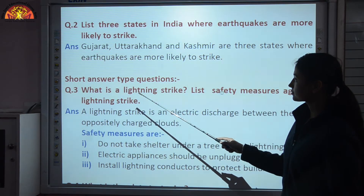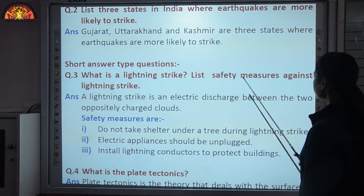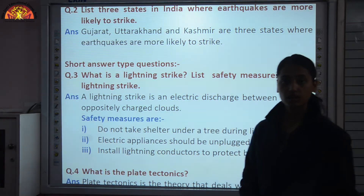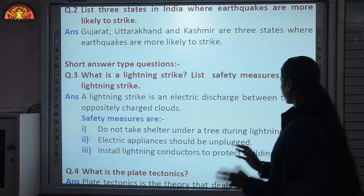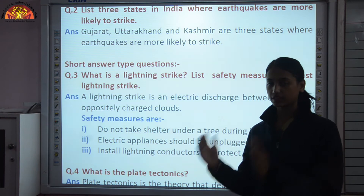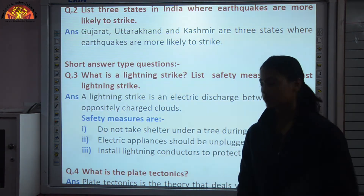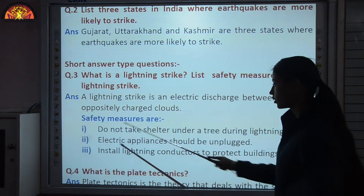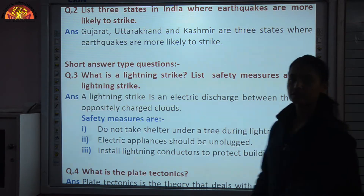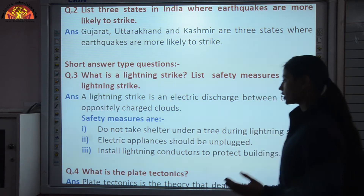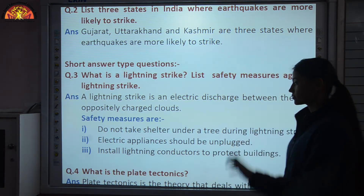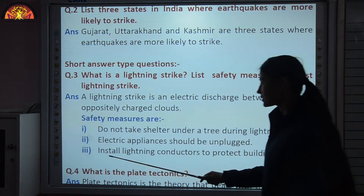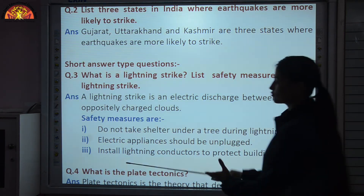Short answer type questions. What is a lightning strike? List safety measures against lightning strike. A lightning strike is an electric discharge between two oppositely charged clouds — unlike charges always attract each other, so when one cloud is negatively charged and the other is positively charged there is interaction between them, and that is a lightning strike. Safety measures: do not take shelter under a tree during lightning as trees are tall and give lightning an easy path; electric appliances should be unplugged; install lightning conductors to protect buildings.